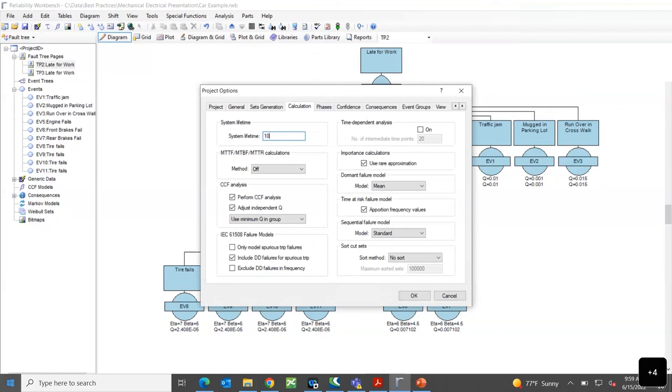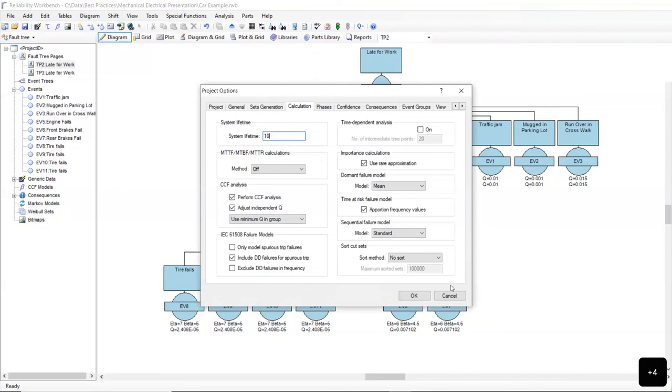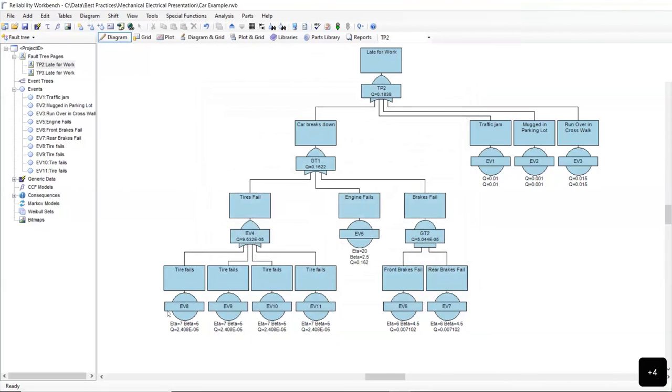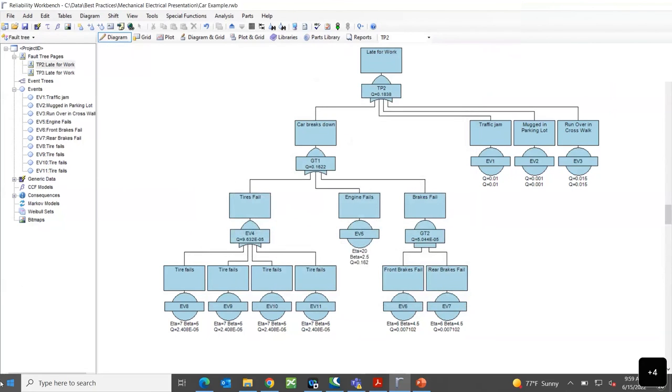And that would give you the probability of failure at 10 years for each component. For example, your engine's 10 years old and has characteristic life of 20 years. And that then identifies what the probability of failure is.